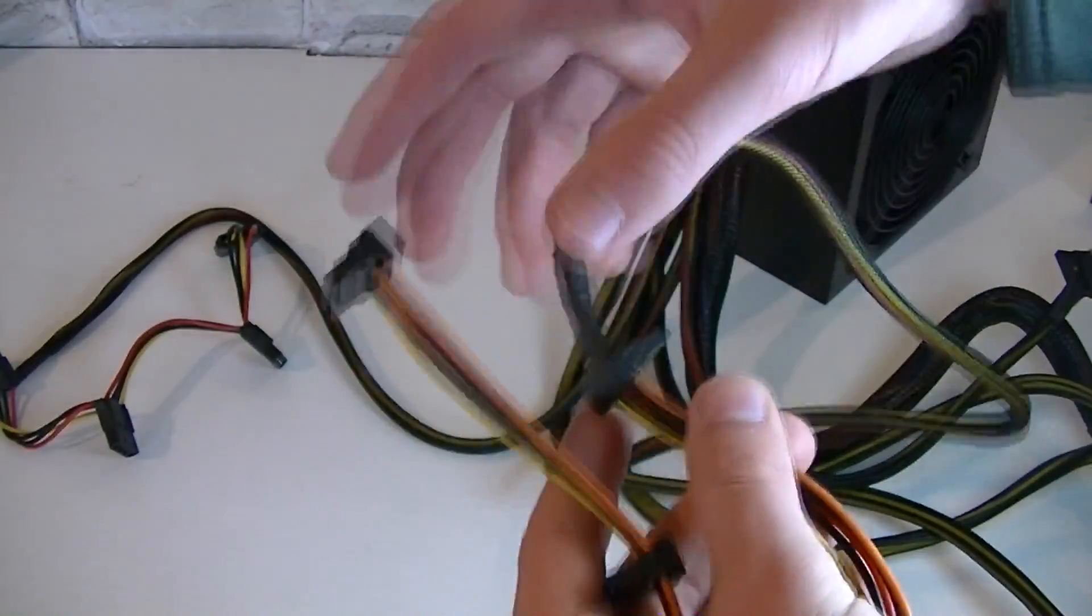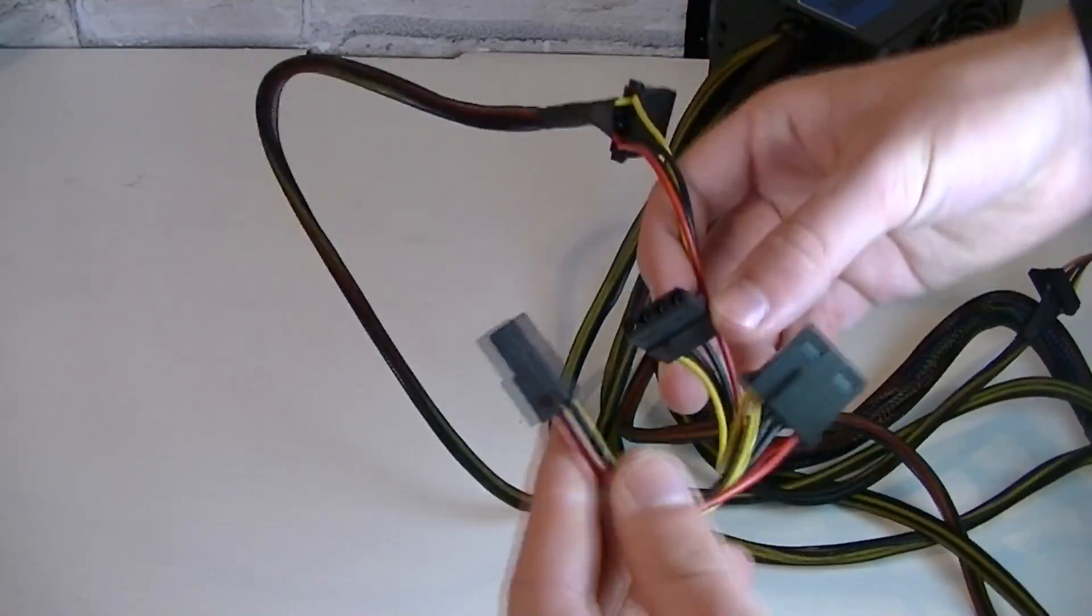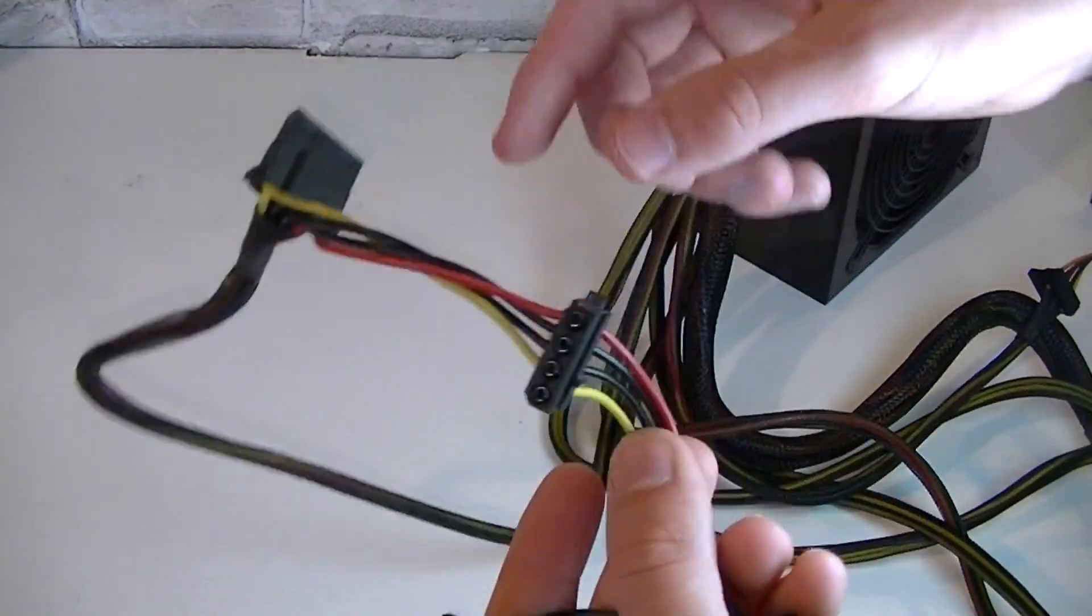Here's the next cable with four SATA connectors and the same thing with the braiding is happening here too. And last but not least you got four molex connectors and the rest also isn't braided. I'm a little disappointed here.